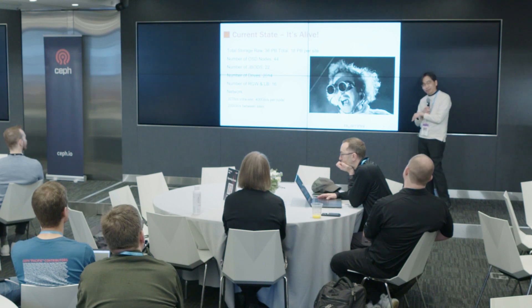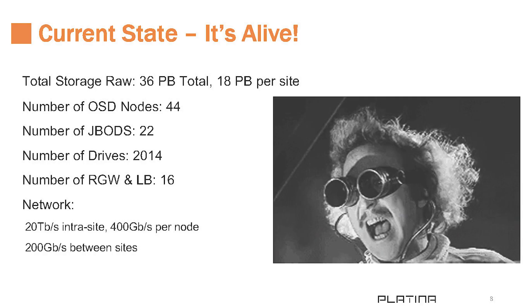The current state is alive and working — we are actually putting data into it now. Total storage between the two sites is about 36 petabytes, about 18 per site. We have 44 OSD servers and 22 JBODs with 100-plus drives each, totaling over 2,000 drives spread across both sites. We have 16 compute nodes doing mostly RGW gateways and load balancers. About 20 terabits per second of networking capacity combined between the sites, every node has 400 gigabits per second links for redundancy and bandwidth, and 200 gigabits per second between the two sites.